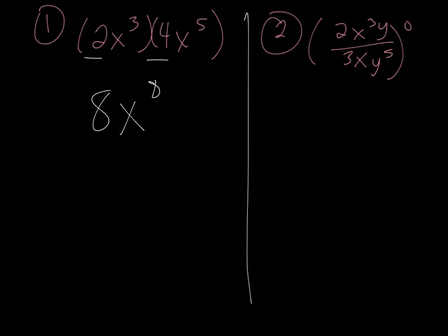Number 2: you have the quantity 2x to the third y over 3xy to the fifth, but all of that is to the zero power. Since it's all to the zero power, anything to the zero power is just 1.